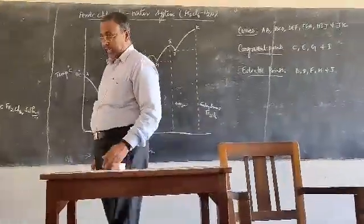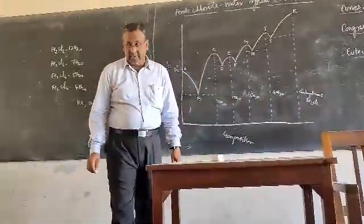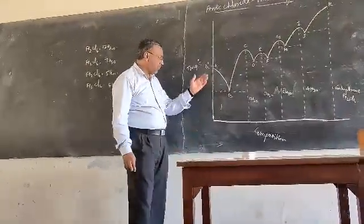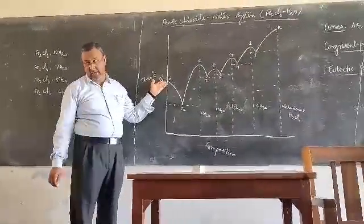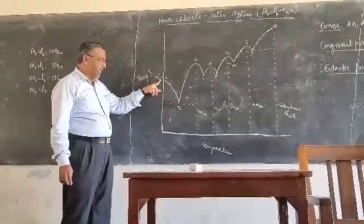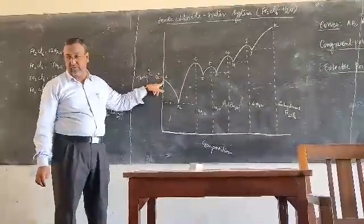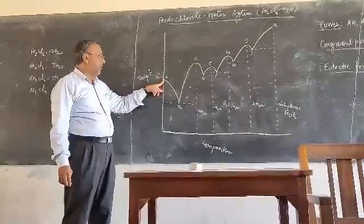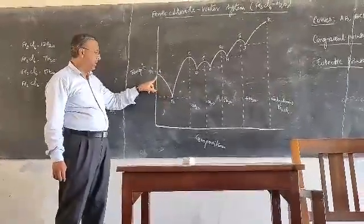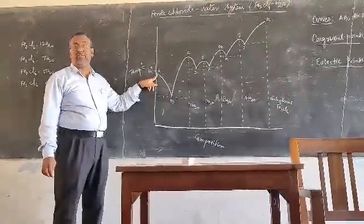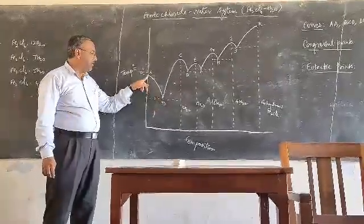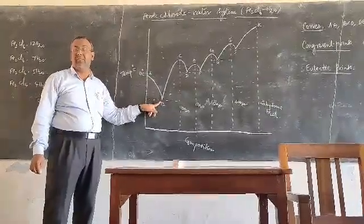Now, let us study one by one. Point A, 0 degrees centigrade, represents the freezing point of pure water. When ferric chloride is added, the freezing point of water goes on decreasing gradually along the curve AB.